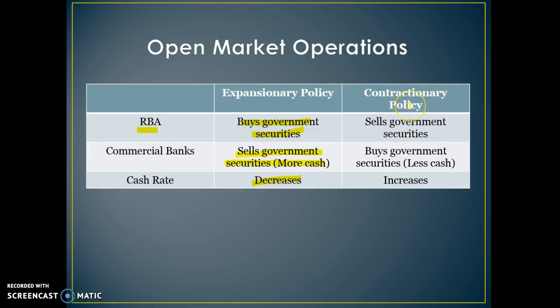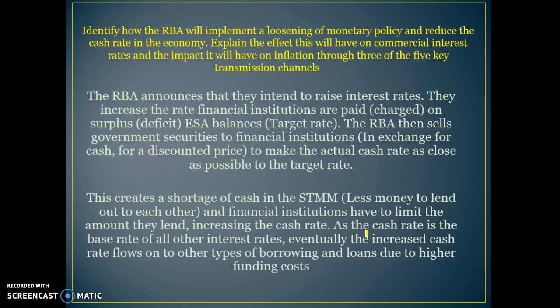When implementing contractionary policy, the RBA will sell government securities to make banks less liquid, and the commercial banks will buy government securities and therefore become less liquid. Because they're getting a discount, that's their incentive to buy them, and that will cause the cash rate to increase.